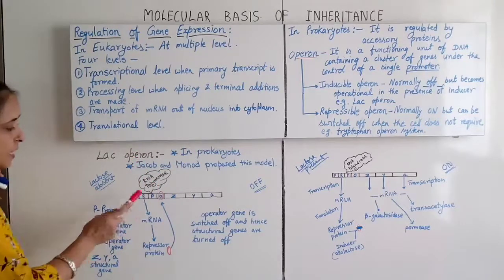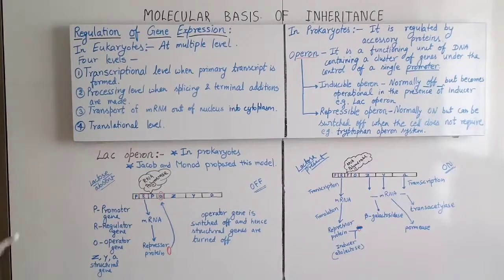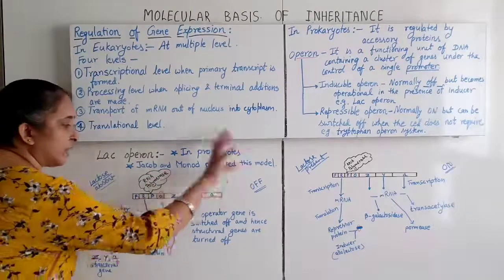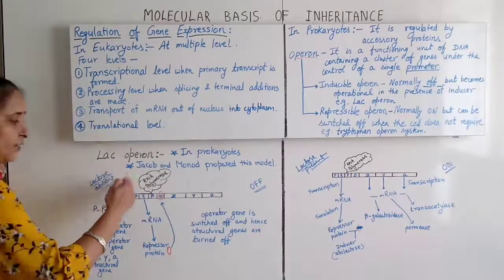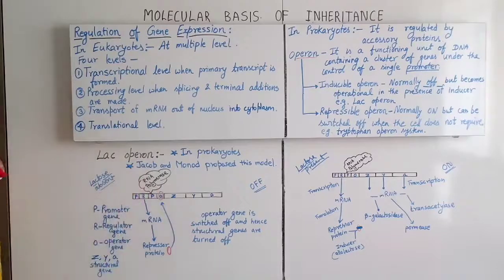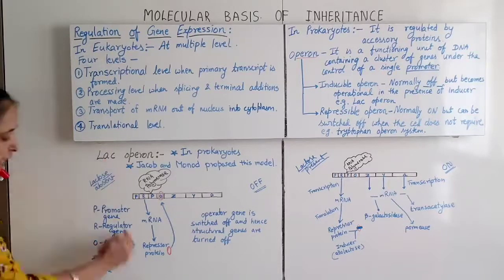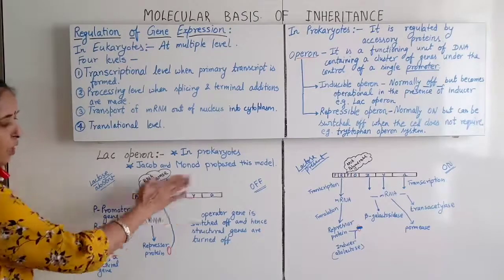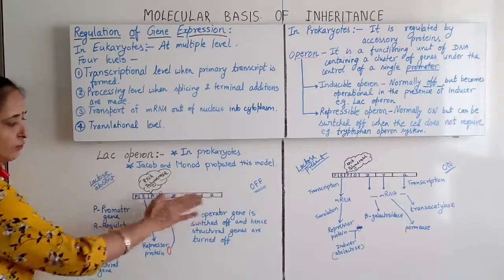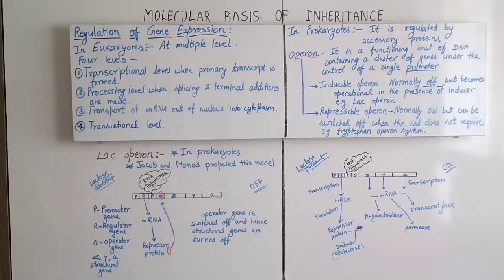When the repressor protein blocks the operator gene, RNA polymerase — which is present on the promoter — is not able to slide towards the structural genes. Therefore, no enzymes are produced, because the cell doesn't need them. The enzymes from structural genes are needed to digest lactose, and lactose is not present here. This is the OFF condition.